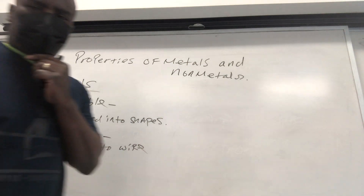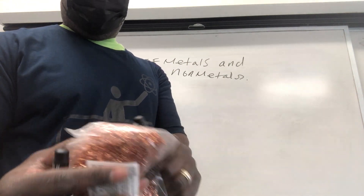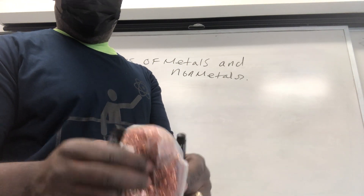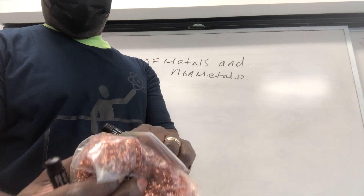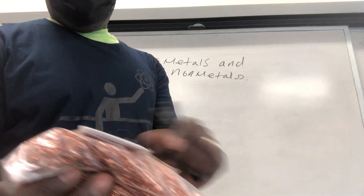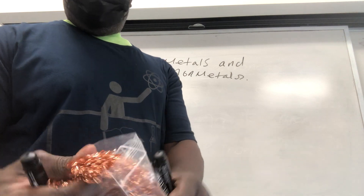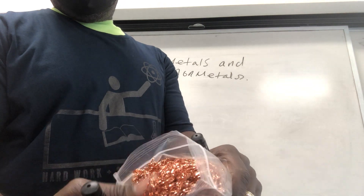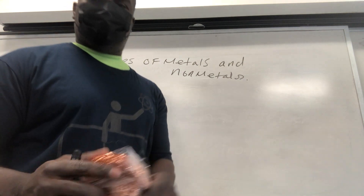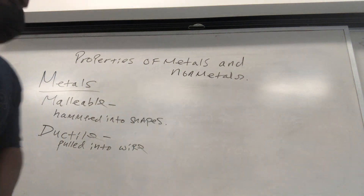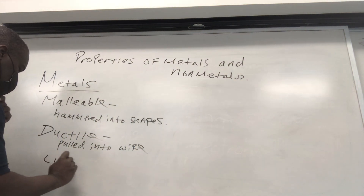Metals also tend to have luster. I have some copper here — it looks like steel wool almost, but it's copper. Do you notice it's a little bit shiny? That shininess is the luster — the reflectability of metals. So metals tend to have luster.